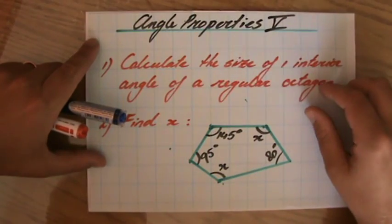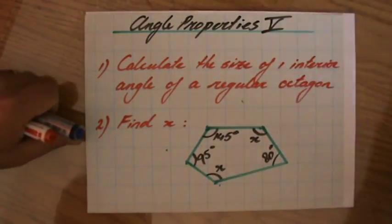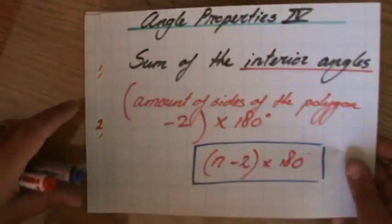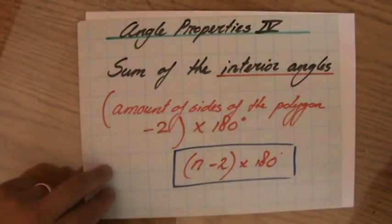We're now going to look at an example question regarding the sum of the interior angles. In my previous video, we've seen that the formula to find the sum of the interior angles for any polygon is n minus 2 times 180 degrees.